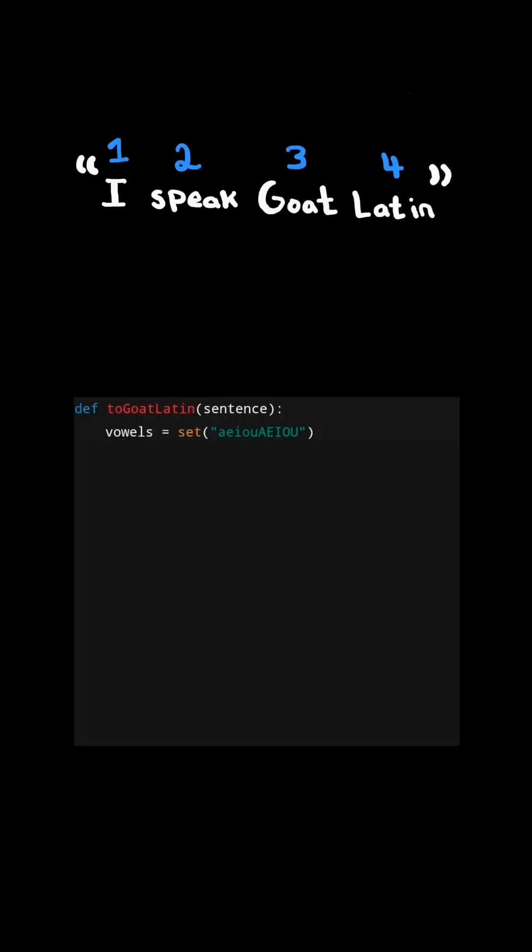First, we will create a set containing all of the lowercase and uppercase vowels. We will then split the sentence by a space. We then initialize an empty list.